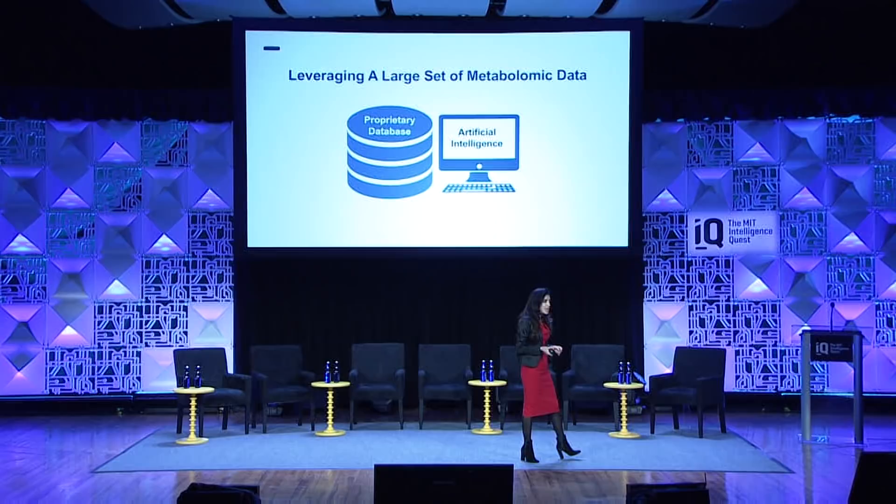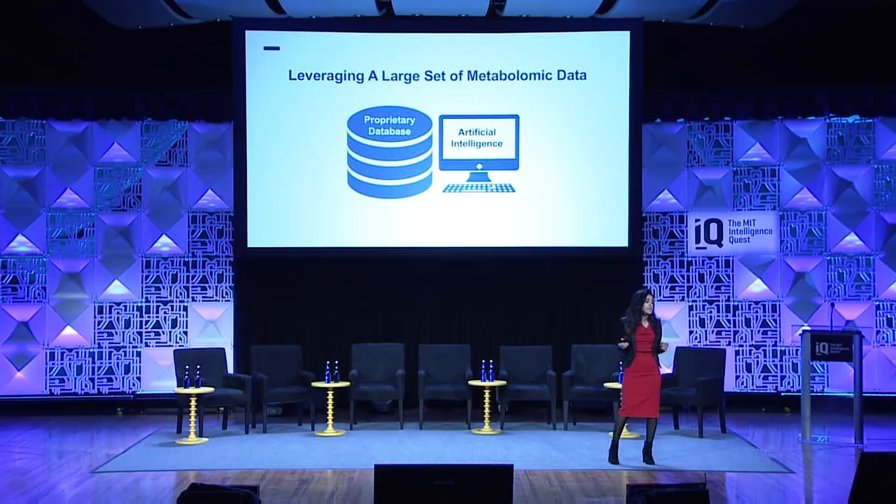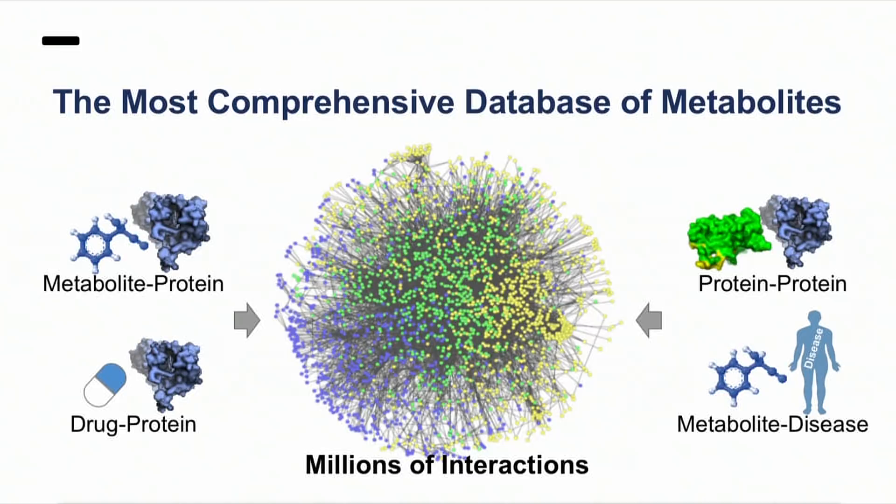Our team at MIT developed a proprietary database and an AI algorithm to overcome these difficulties. We have created the most comprehensive database about metabolites, their interactions with proteins, the interactions of proteins with other proteins, the drugs that are targeting these proteins, as well as the association of metabolites with diseases. We have combined all this data as a gigantic network — a big hairball with millions of interactions — and then we do inference on top of that.